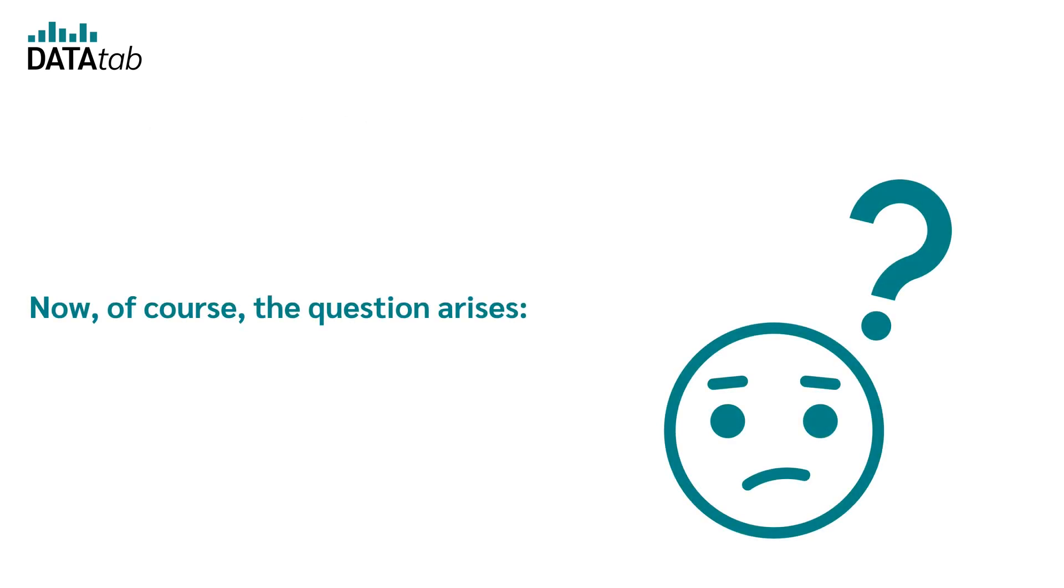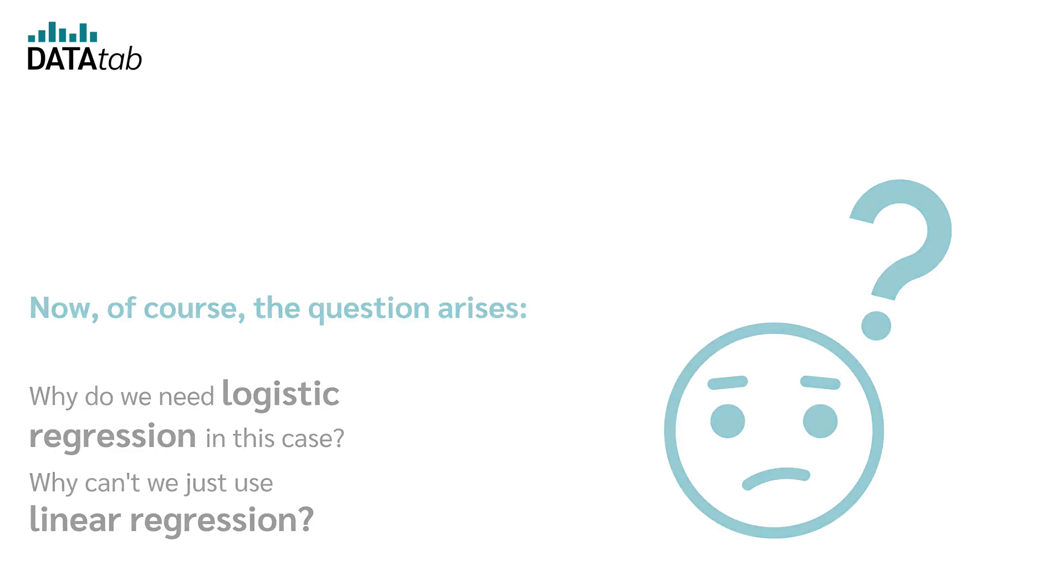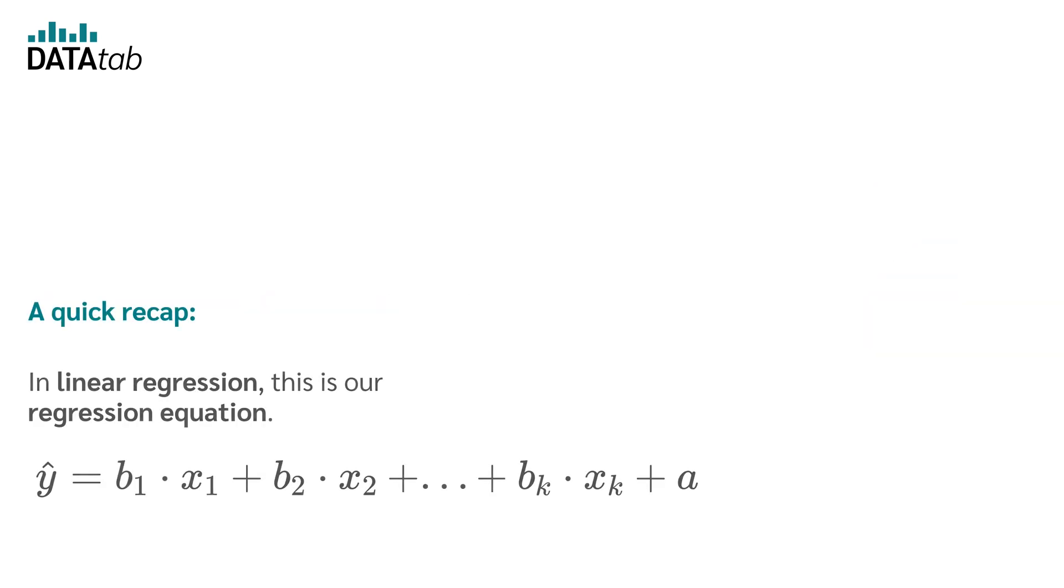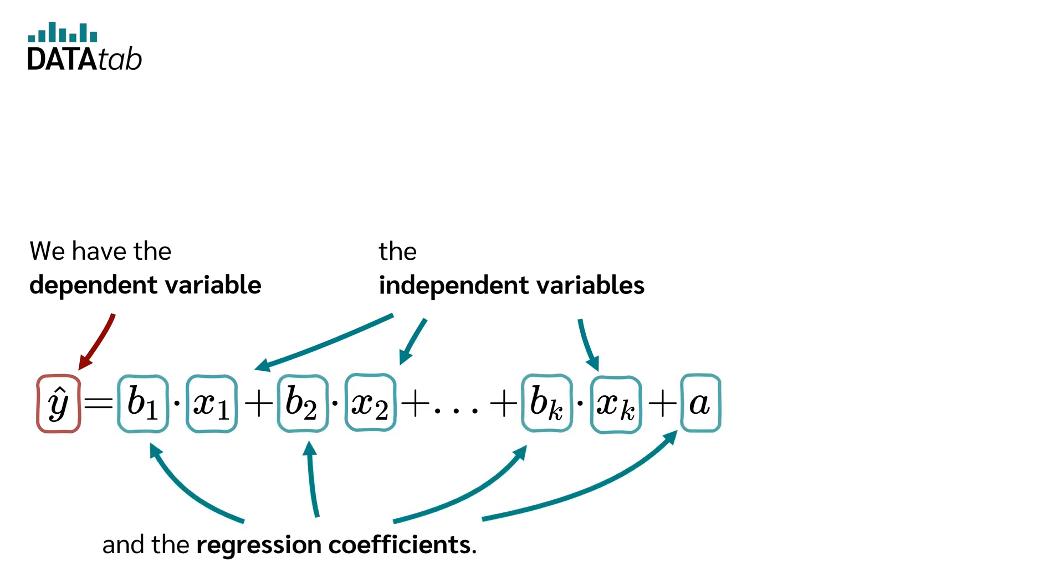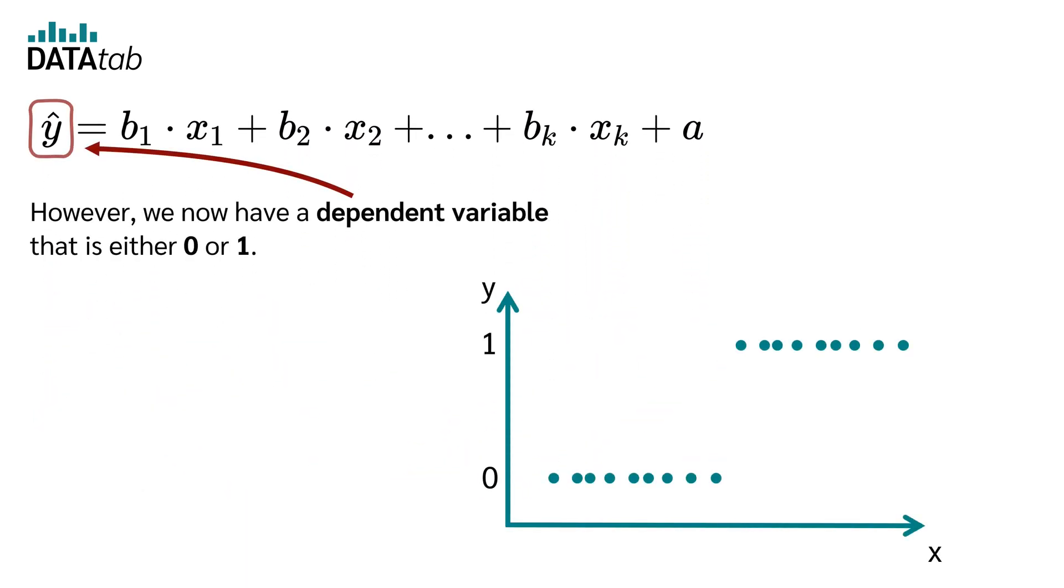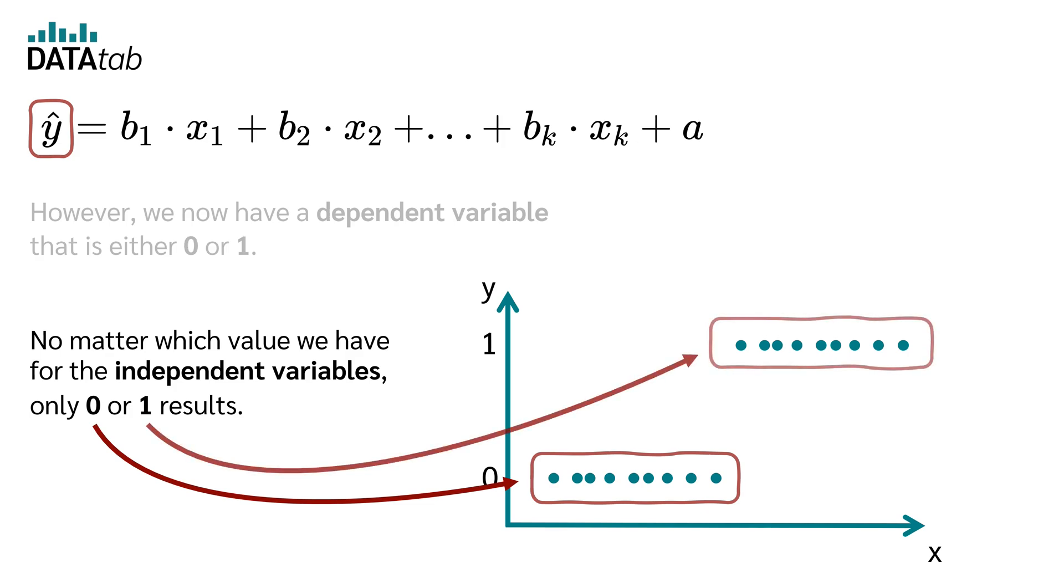Now of course the question arises, why do we need logistic regression in this case? Why can't we just use linear regression? A quick recap. In linear regression, this is our regression equation. We have the dependent variable, the independent variables and the regression coefficients. However, we now have a dependent variable that is either 0 or 1. No matter which value we have for the independent variables, only 0 or 1 results.